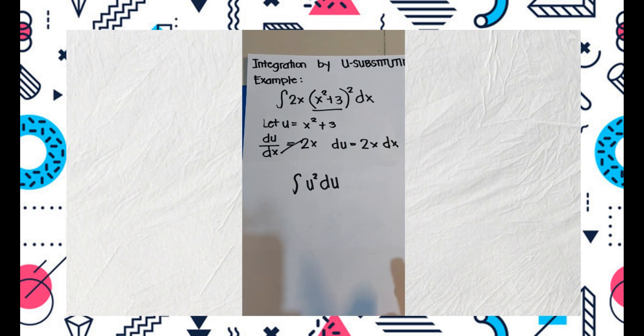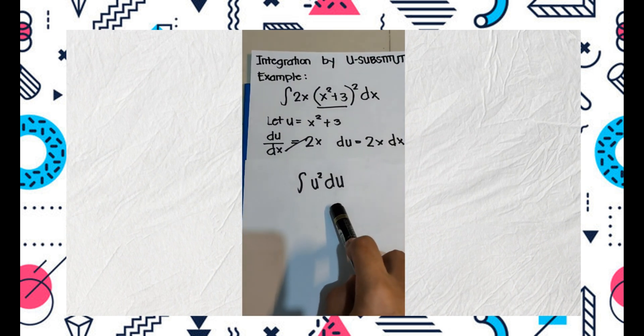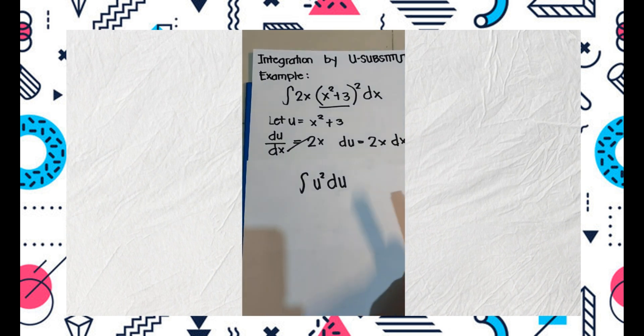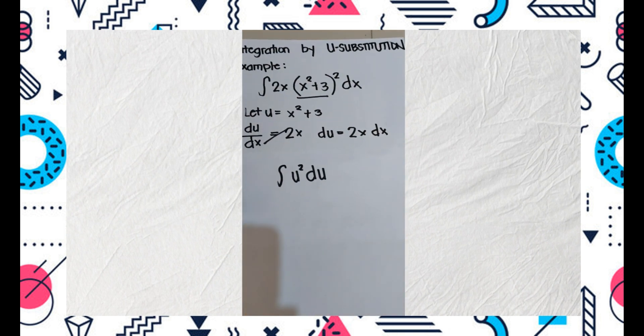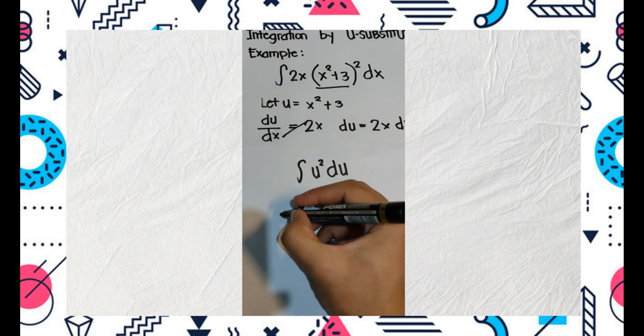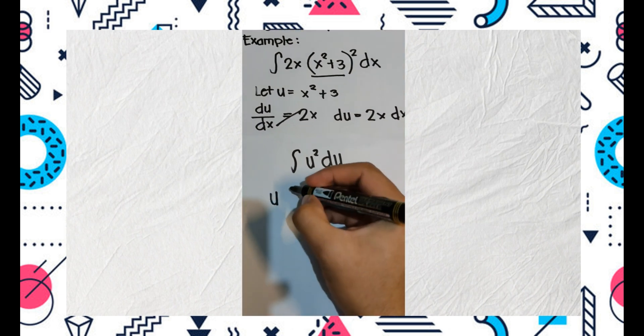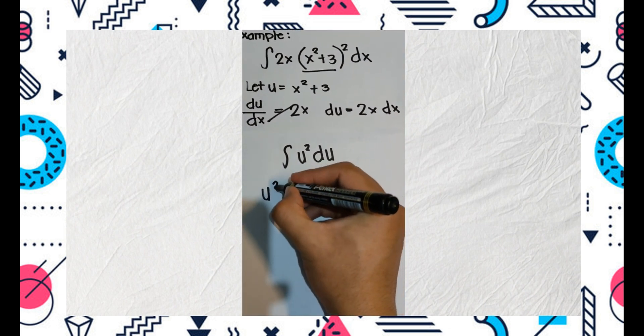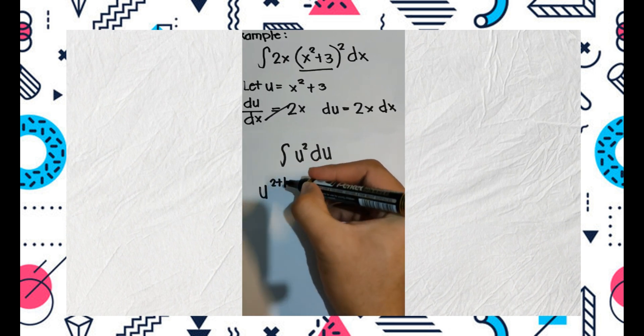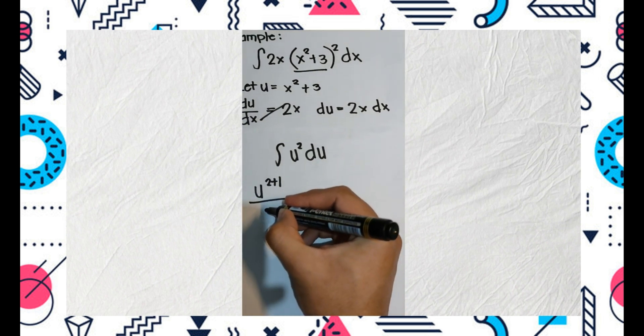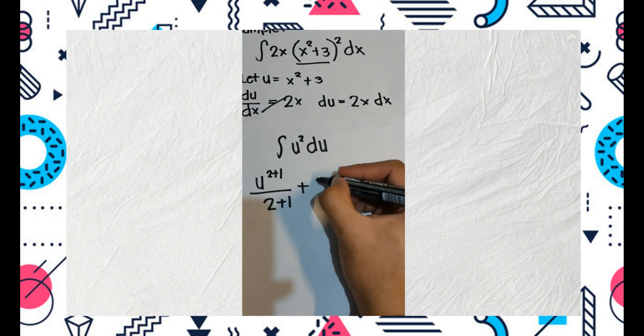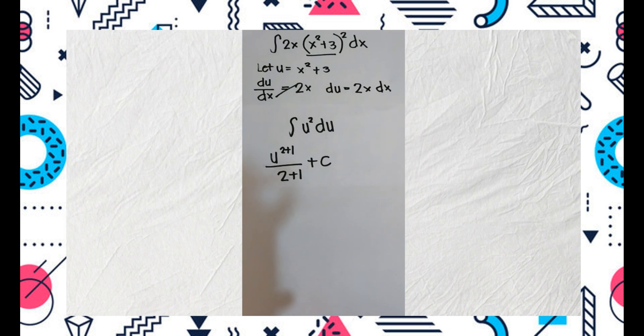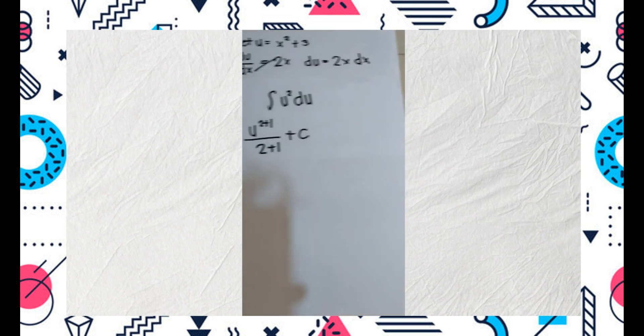Now we will rewrite the problem as integration of u square du. To solve this by power rule, we can get the integral as u raised to 2 plus 1 over 2 plus 1 plus c. Remember that you need to always put c.